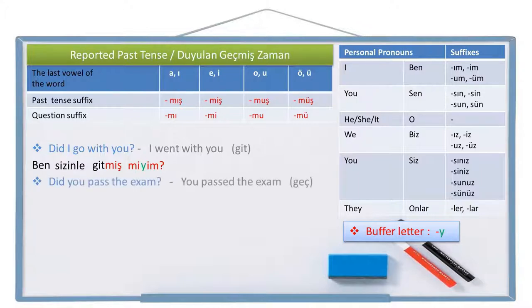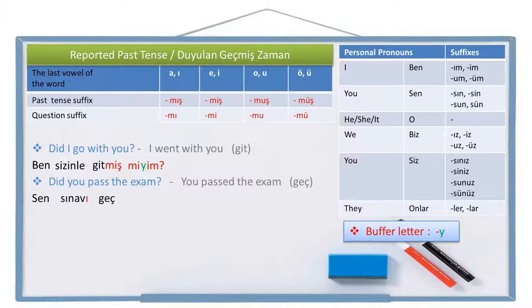Did you pass the exam? This is the positive question sentence, so let's write the positive sentence: you pass the exam. Pass is 'geç' in Turkish. The person pronoun you is 'sen', exam is 'sınav', the exam is 'sınavı', pass is 'geç', past is 'geçmiş'. Now we write the question suffix 'mi' and the person pronoun suffix to the end. Sen sınavı geçmiş misin? Did you pass the exam?